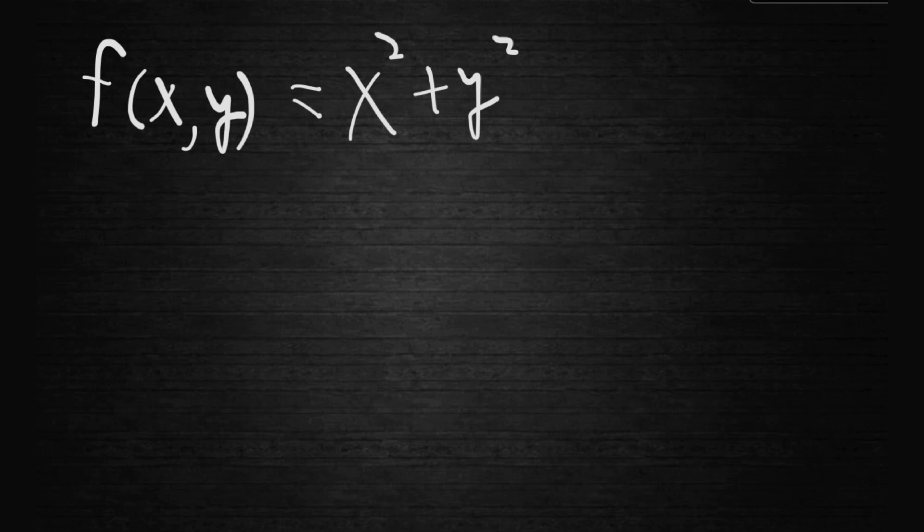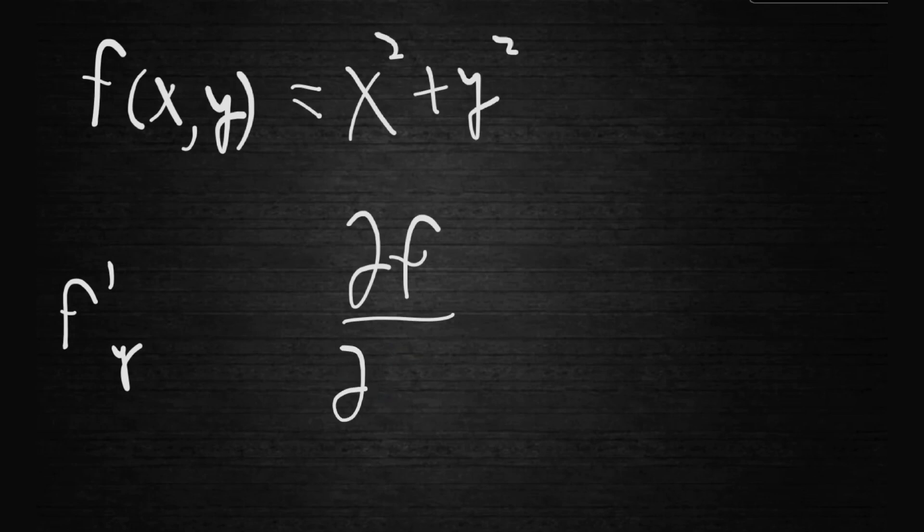Now, the partial derivative of f with respect to x can be written as such. You could do f prime and then subscript of x or y depending on whatever variable you want to do partial differentiation with. Or you could also do it as writing this Greek symbol del. You write del f over del whatever variable you're working with, which can be x. It could be set as del f/del x.